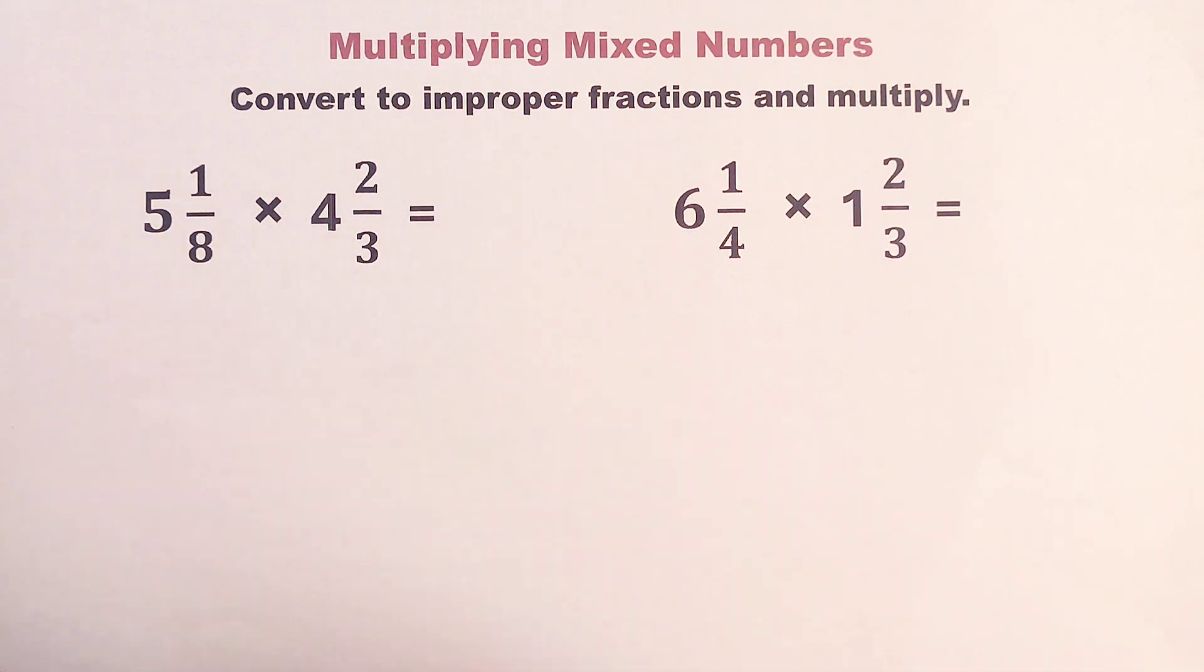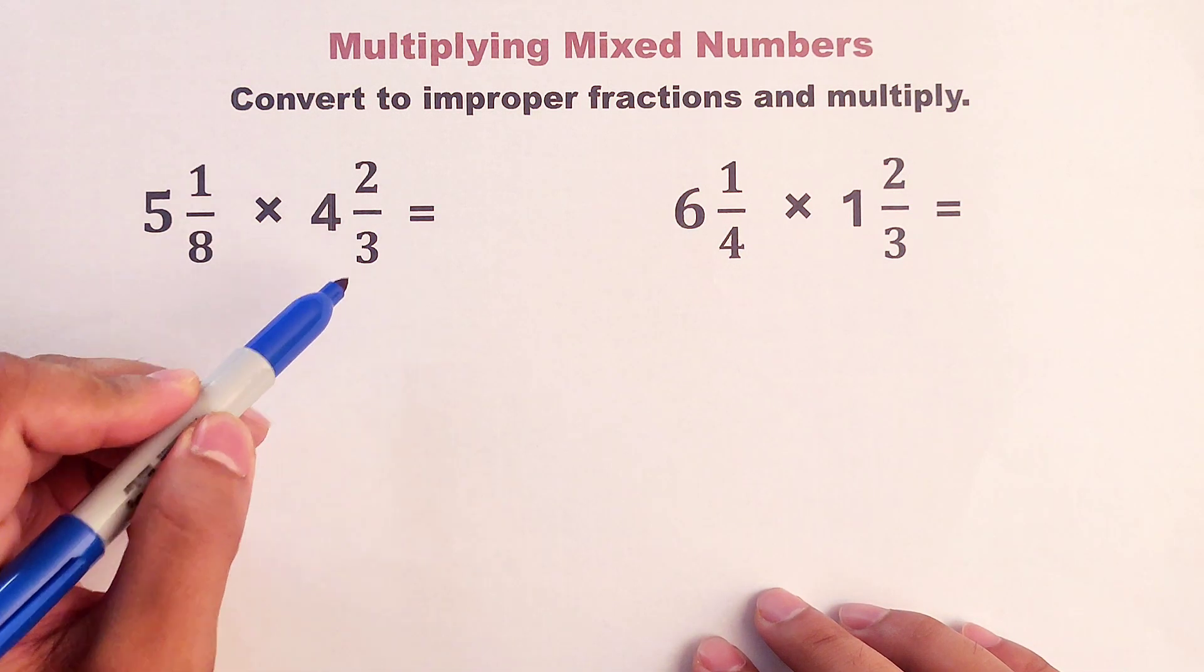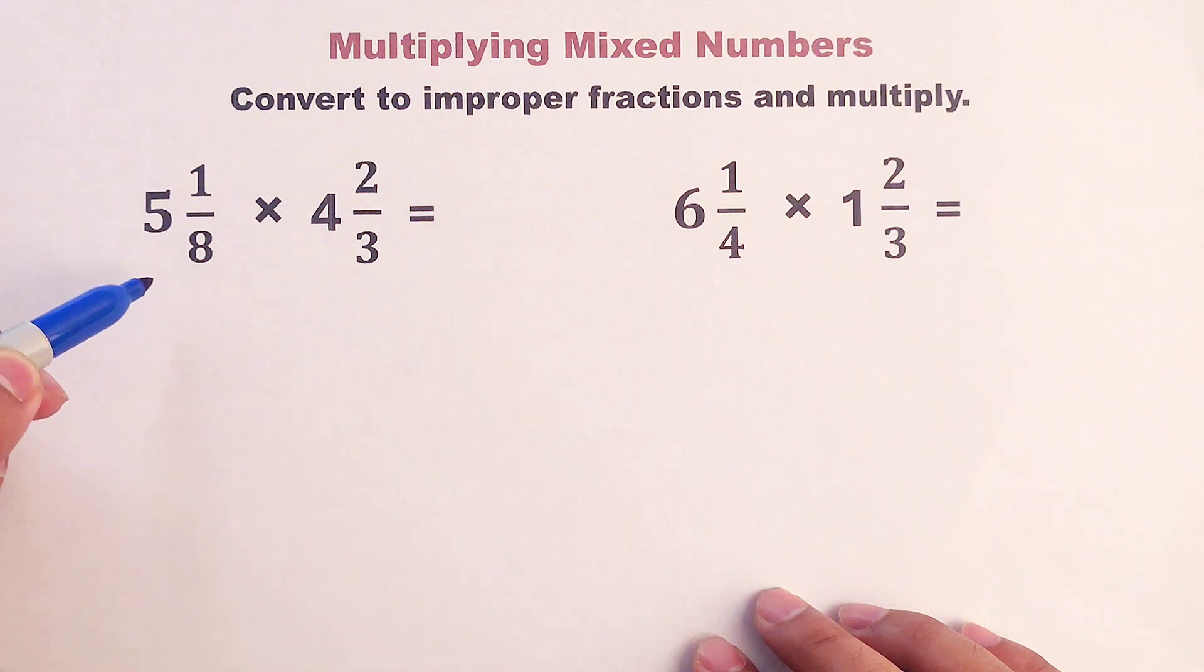Let's start with the first example. We have 5 and 1 over 8 times 4 and 2 over 3. First, we will convert this 5 and 1 over 8 into improper fractions.